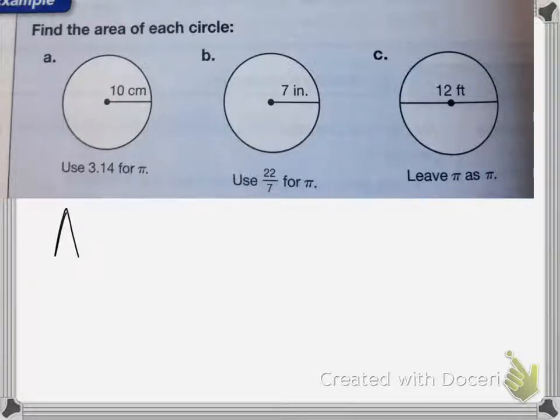Now the area of a circle is equal to pi times radius squared.